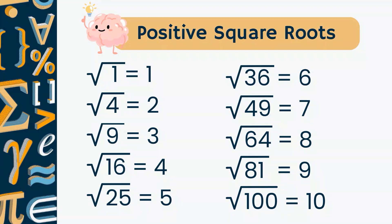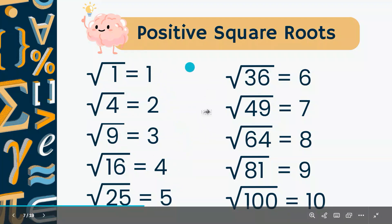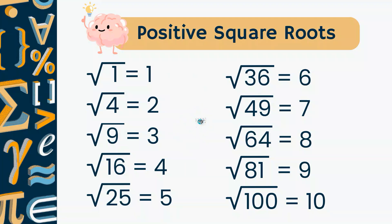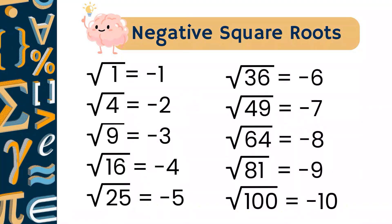Let's look at a positive square root chart. If you square 1 you get 1, if you square 2 you get 4, if you square 3 you get 9, and so on. This chart is for reference — you can jot it down in your notebook. Now let's look at negative square roots. Remember, a negative number times a negative number is a positive number, which is why the number inside the square root is still positive while the answer is negative.